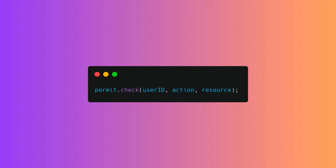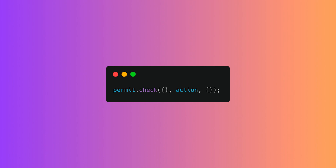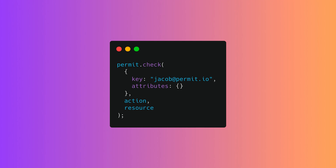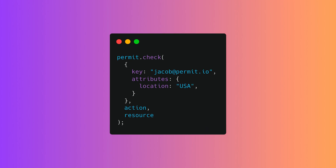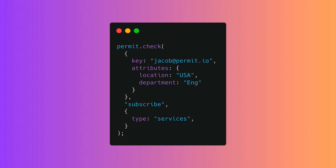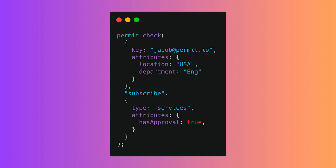That's a simple RBAC check — so how do we expand this for ABAC? Instead of passing the user ID or resource name directly, we pass in objects. For the user, pass an object with 'key' as the user ID and an 'attributes' object containing location equal to USA and department equal to engineering. The action is 'subscribe'. For the resource, pass an object with type 'services' and an 'attributes' object containing has_approval equal to true and cost equal to 500.